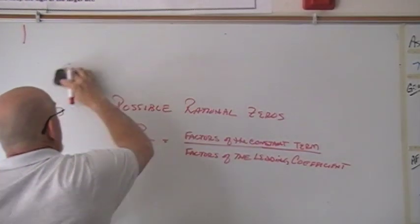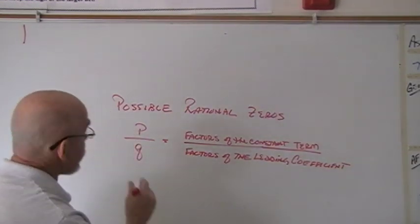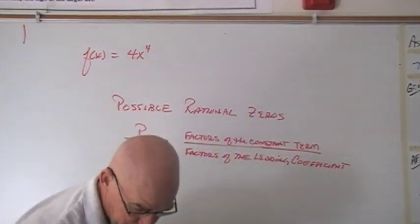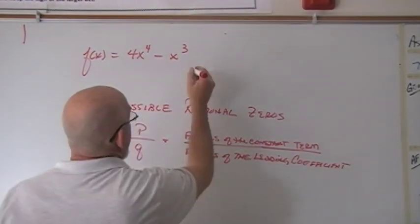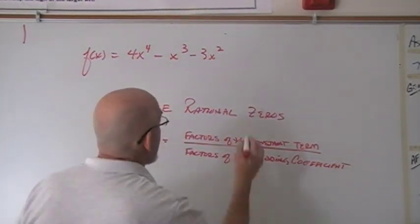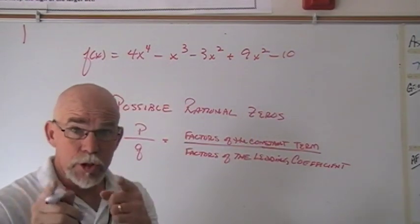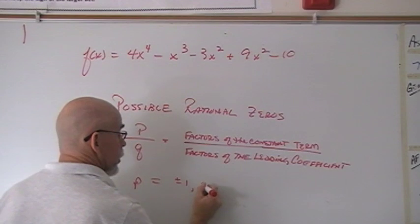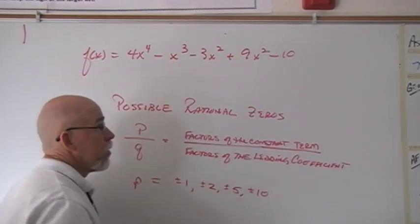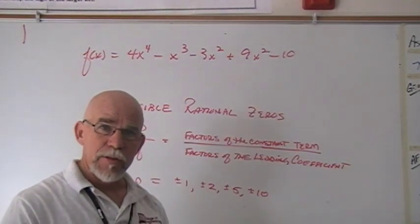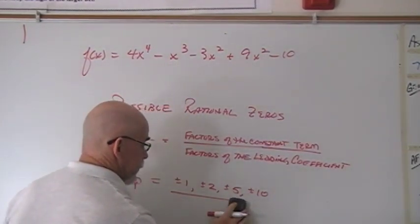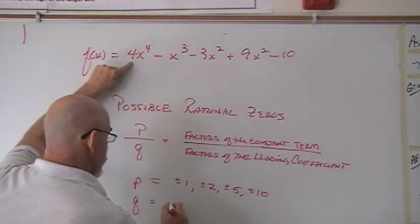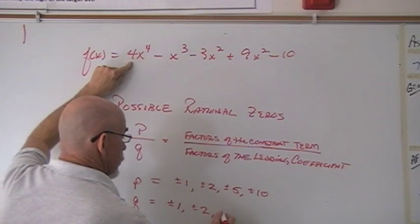Let me give you an example. I'm going to use a function that demonstrates when we have multiple factors. The only two terms we need to focus on are the constant term and the leading term. So P, in this case, can be the factors of negative 10: plus or minus 1, plus or minus 2, plus or minus 5, and plus or minus 10. And Q, the denominator of all possible zeros, comes from the leading term: plus or minus 1, plus or minus 2, and plus or minus 4.